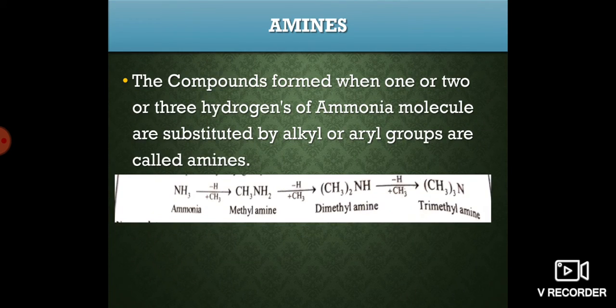When another hydrogen is replaced by one more alkyl group, we get dimethyl amine. And replacing the last hydrogen atom with an alkyl group gives us trimethyl amine.